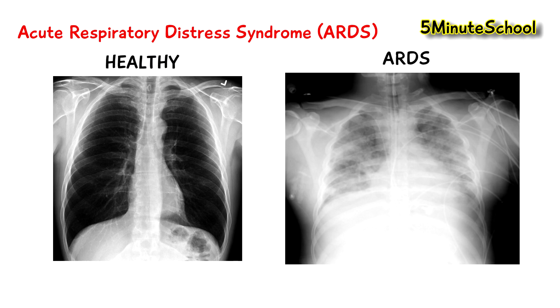Opacity or opacification, when you're looking at an x-ray, just means whiteness as opposed to shading. So we have bilateral opacification on both sides of the lungs.